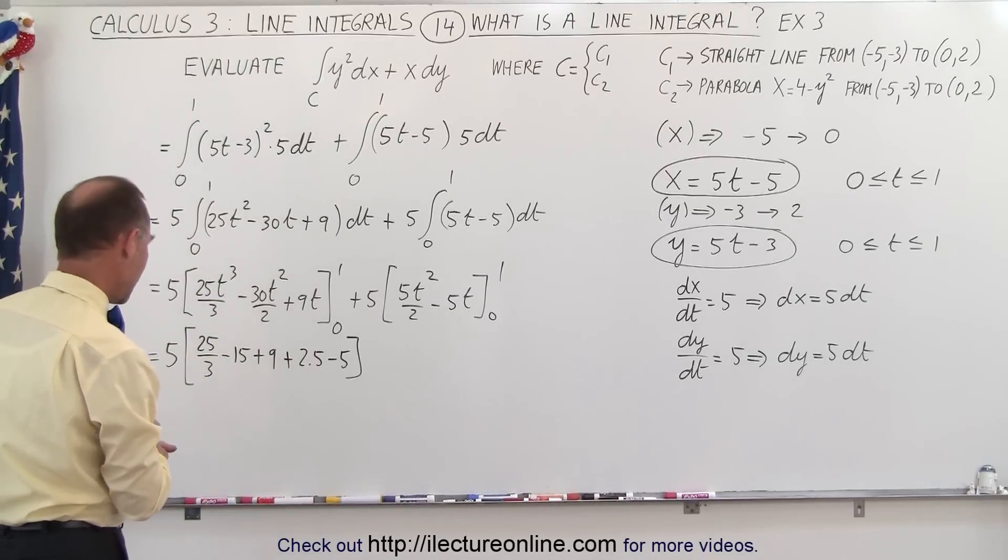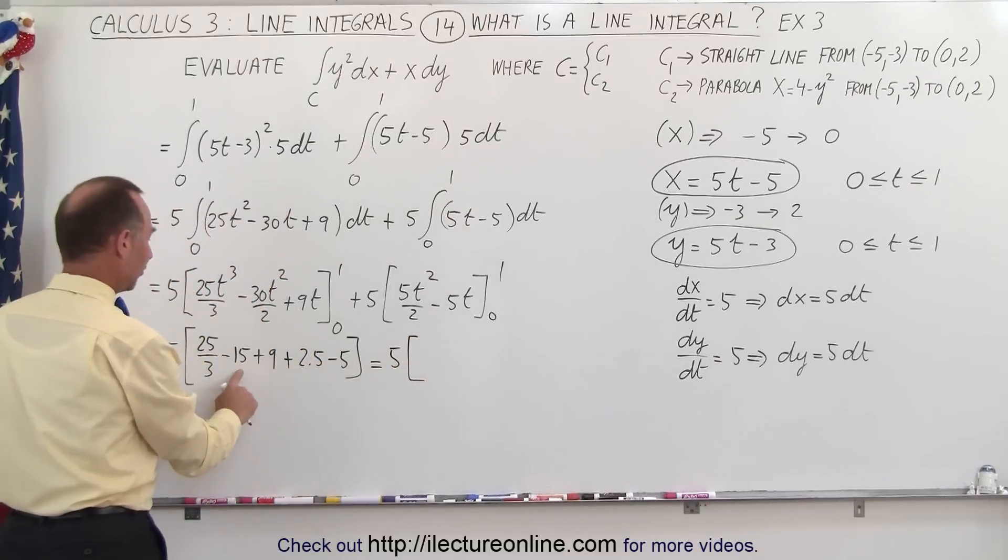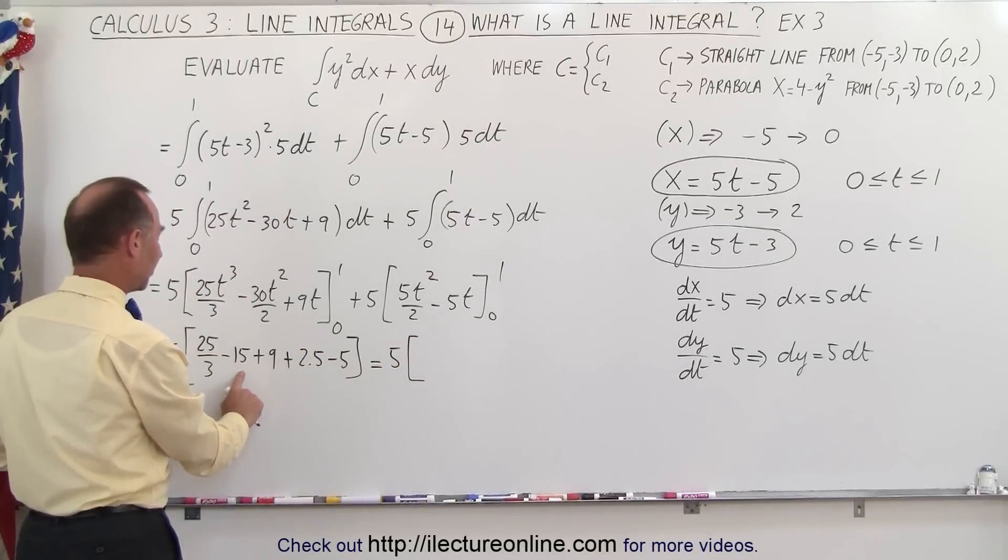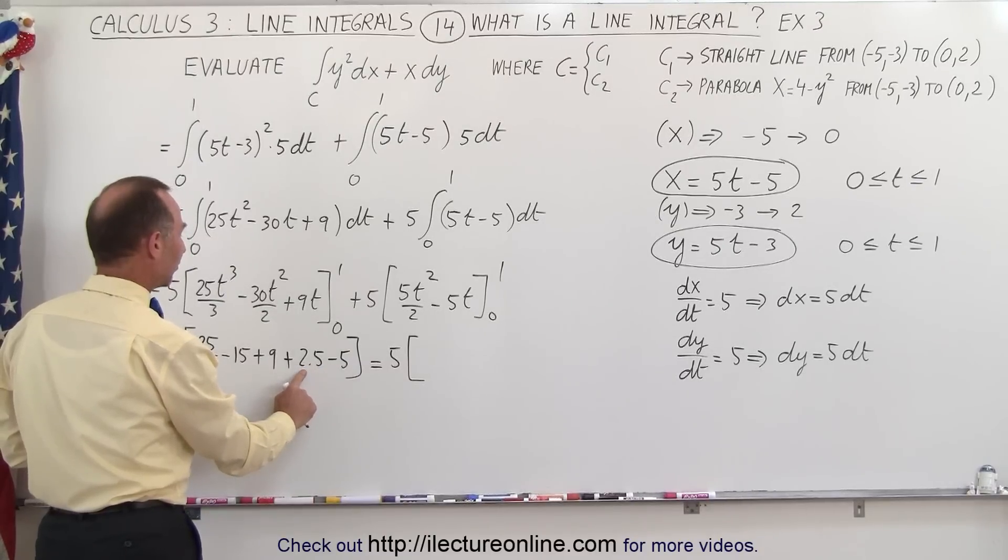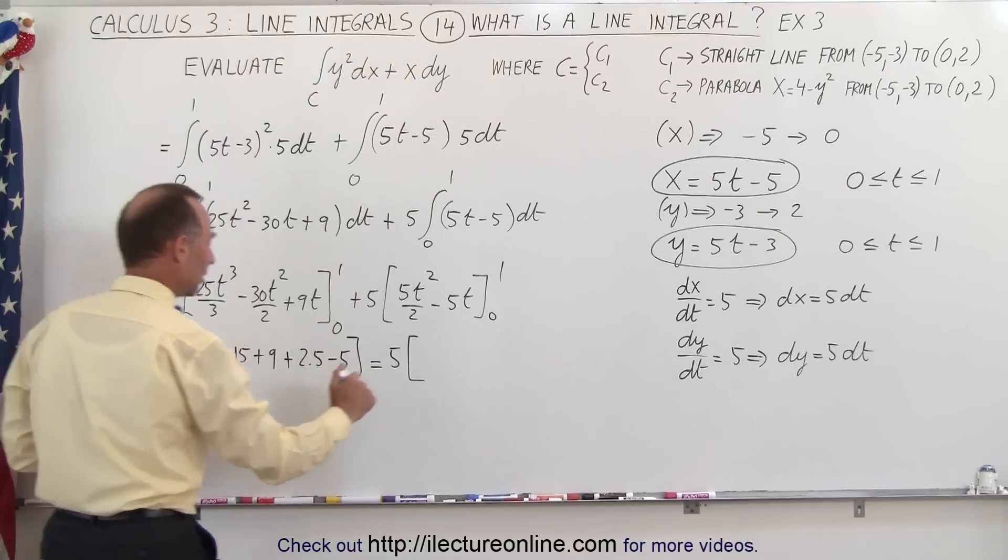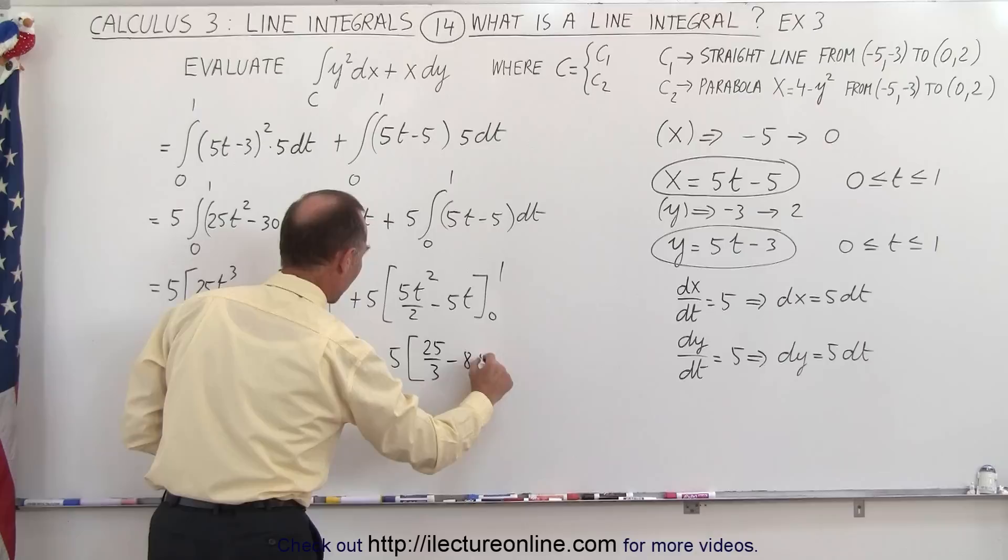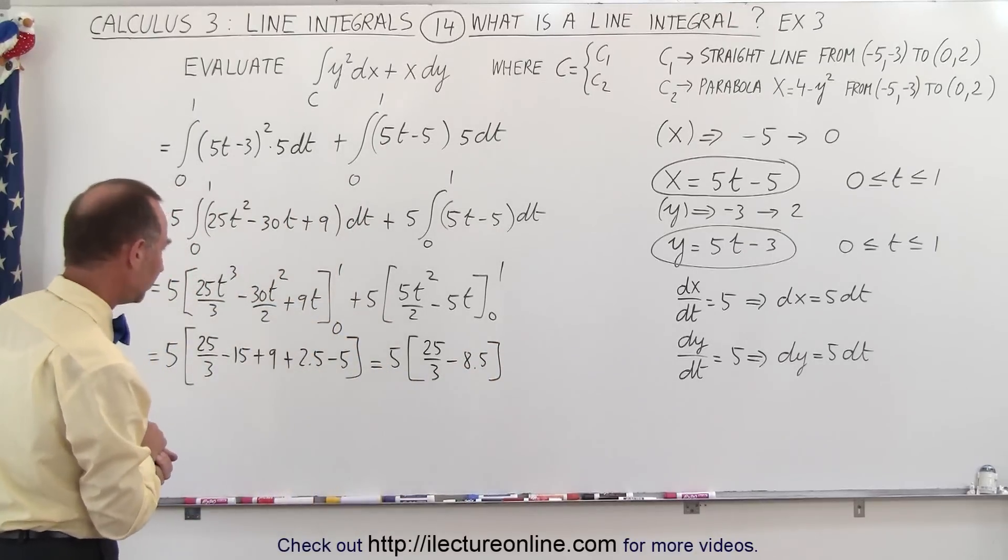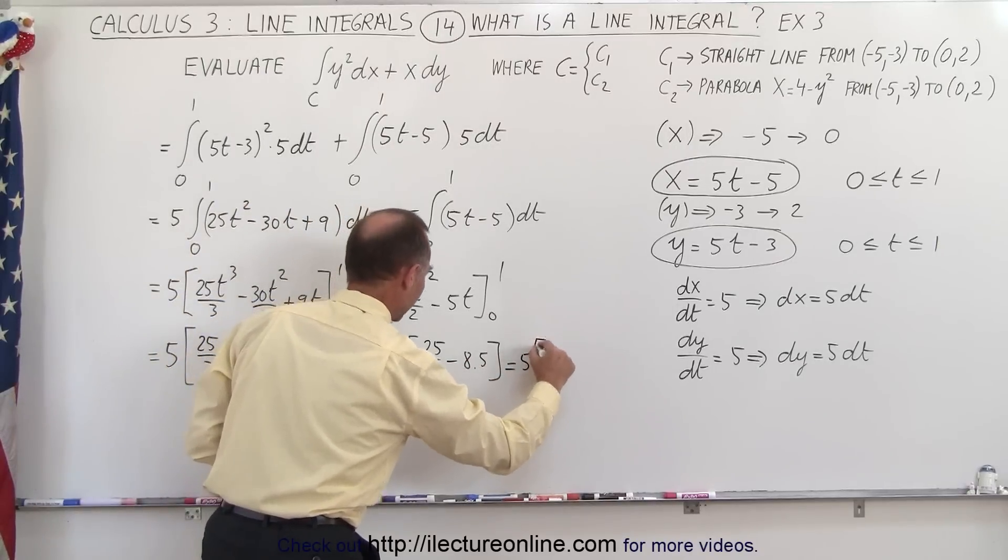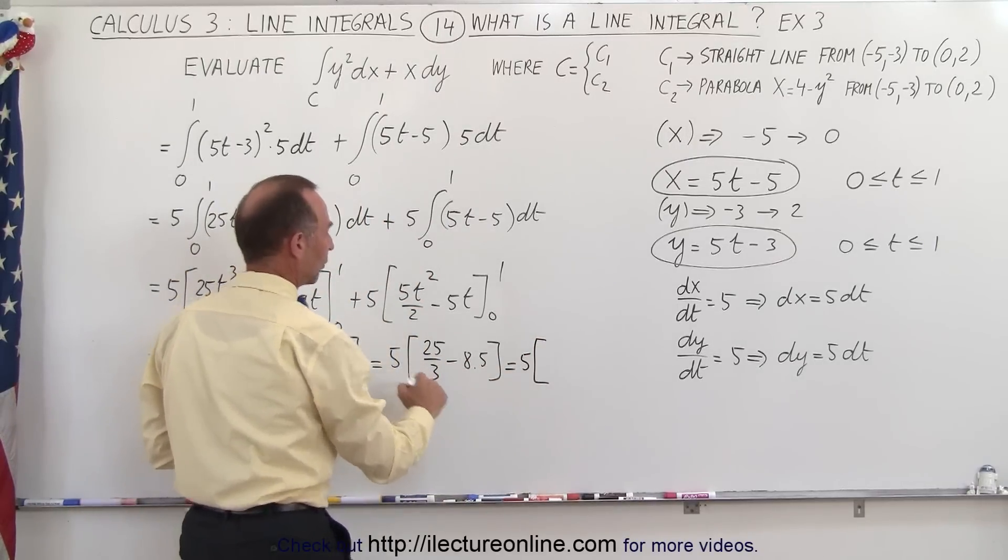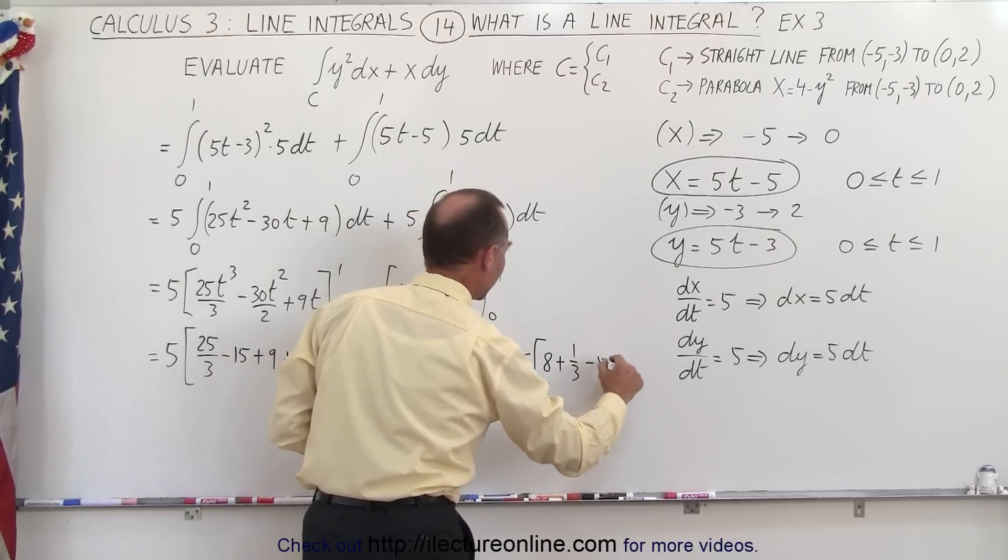So let's see here, what do we have? This is equal to 5 times, minus 15 plus 9 is a minus 6, minus 5 is a minus 11, plus 2 is a minus 9, plus I have is minus 8.5. So we end up with 25 over 3 minus 8.5. So now this is equal to 5 times, that's 8 and a third, so it would be 8 plus 1 third, minus 8 minus 1 half.